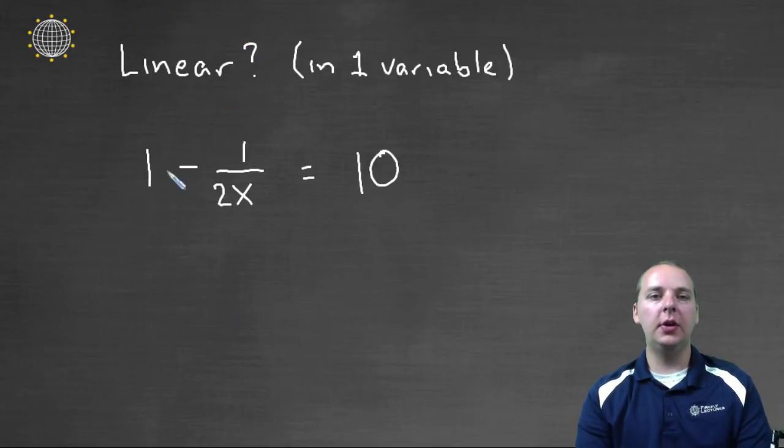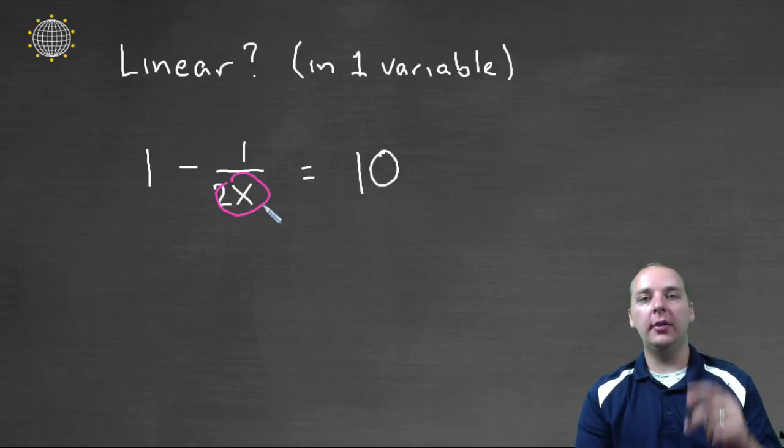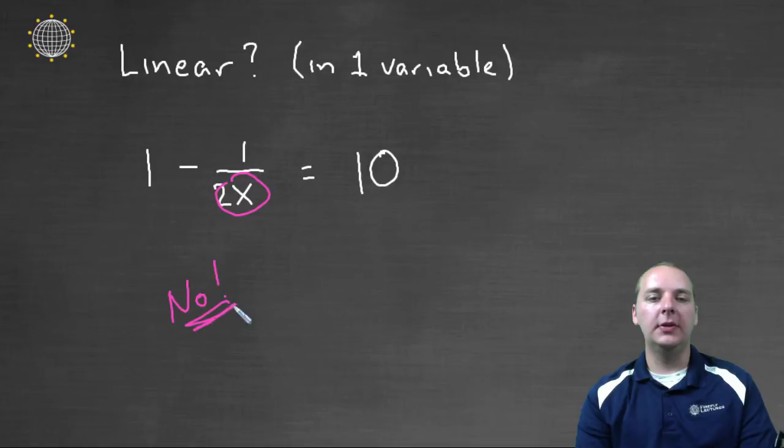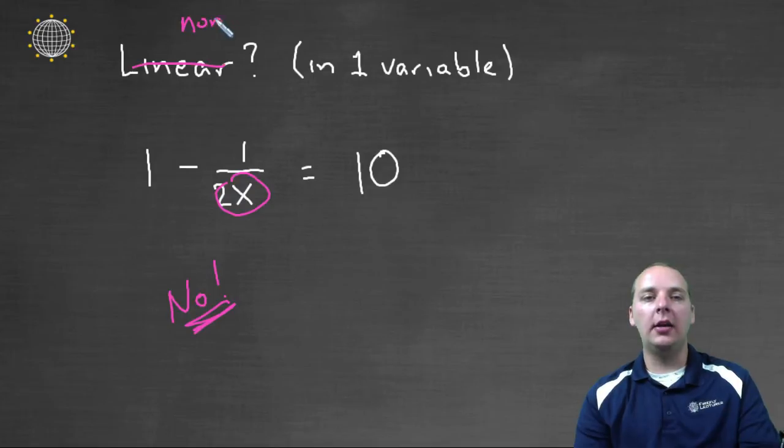Here's our next one. One minus one over two x equal to ten. So here I see this is not going to work because I've got a variable, one variable, that's a good thing. Exponent of one, that's a good thing. But the variable is where? The variable is in the denominator, which we can't have. So unfortunately, this is a no. This equation is not linear. The word we would use is, we would say that it's non-linear.